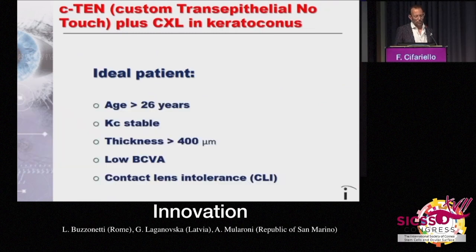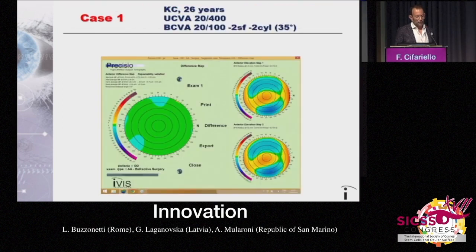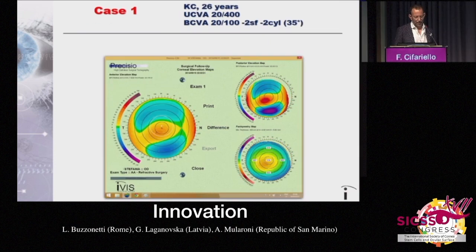The ideal patient for this surgical procedure is obviously a stable keratoconus, cornea thickness exceeding 400 microns, low BCVA, and intolerance to contact lenses. Here we may see a picture of the surgical tomographer with a differential map in green between the first and the second acquisition of the measurement, and therefore the repeatability criteria are satisfied.